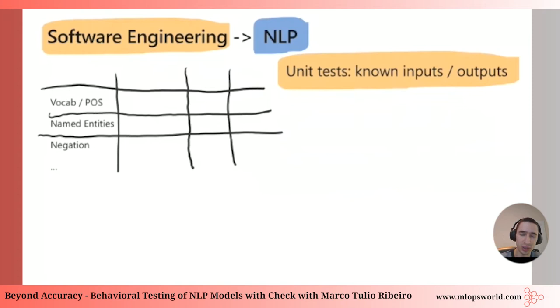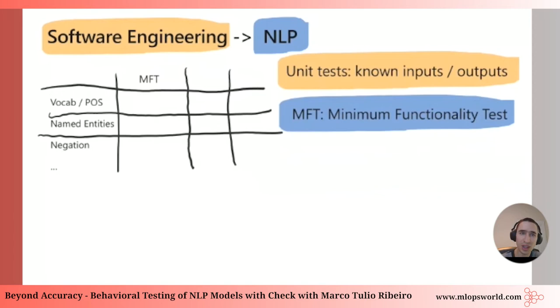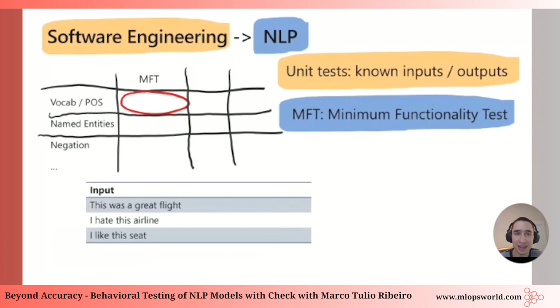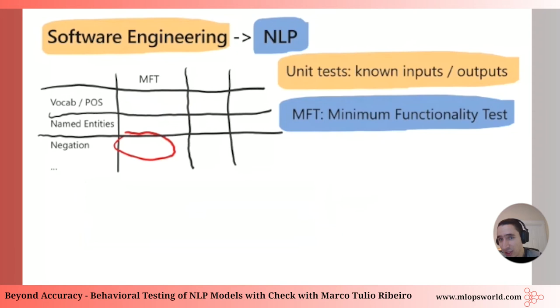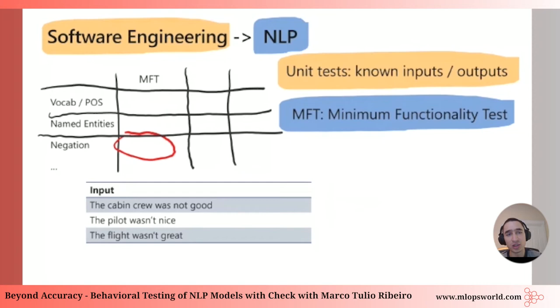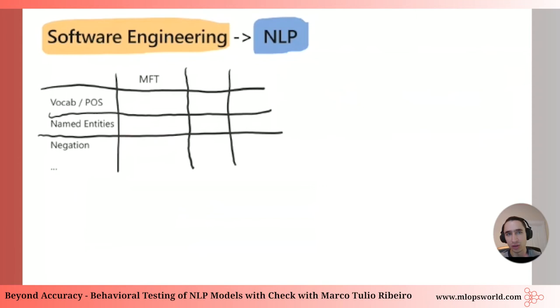The first test type is based on unit tests, which we call Minimum Functionality Tests (MFT). For a specific capability, you write examples that are as easy as possible — the minimum functionality the model needs for that capability. For sentiment analysis vocabulary, easy examples include: 'this is a great flight,' 'I hate this airline,' 'I like this seat.' For negation, tests include negated sentences like 'this wasn't good,' 'this wasn't great.' The idea is to check whether the model has the minimum required capability.